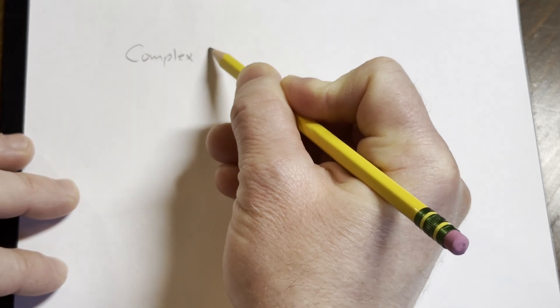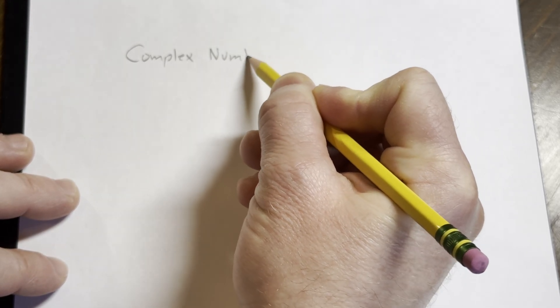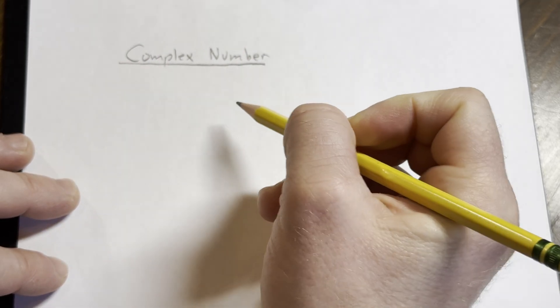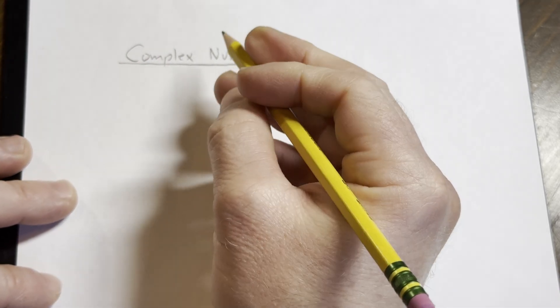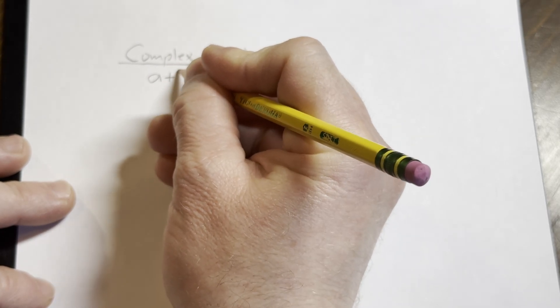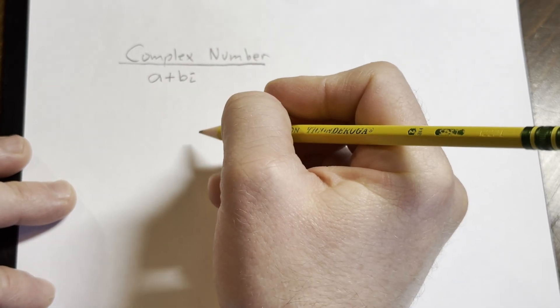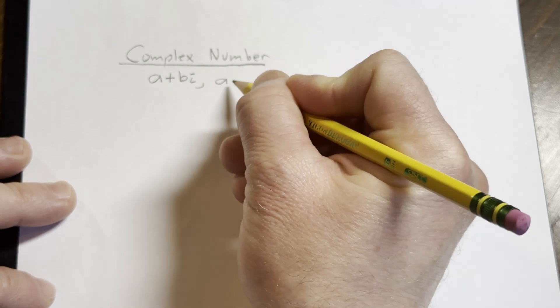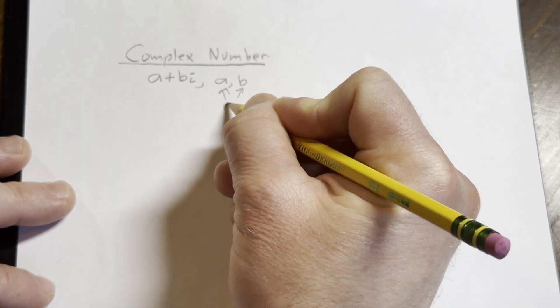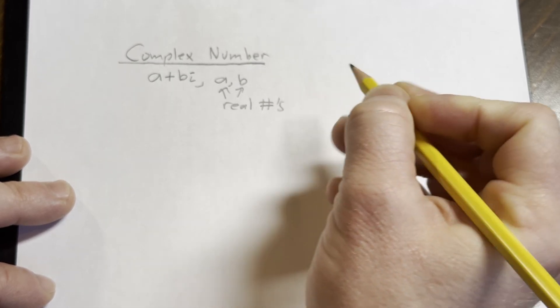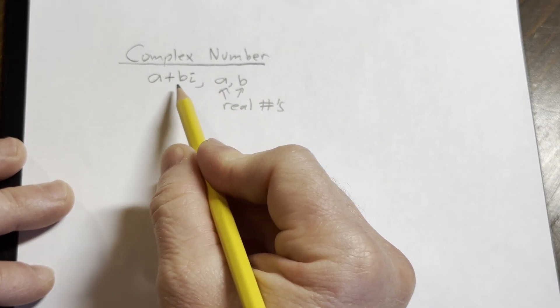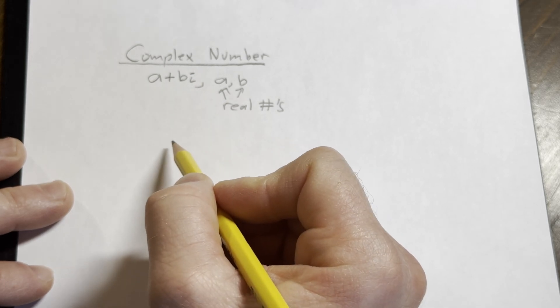Complex numbers. So let's look at what is a complex number. A complex number is a number that has the form a plus bi. And here a and b are real numbers. A complex number is a number that can be written in the form a plus bi.